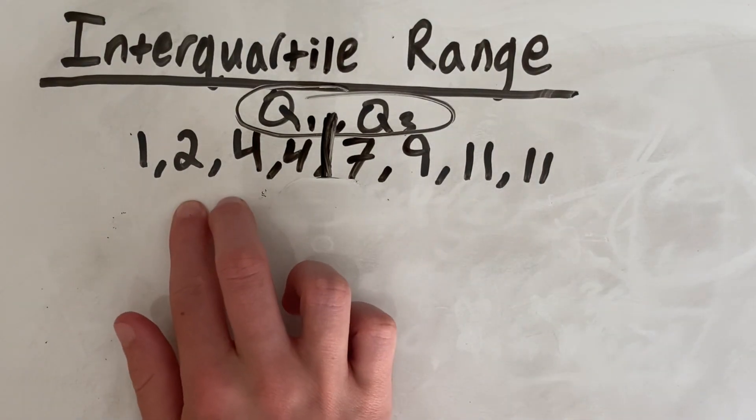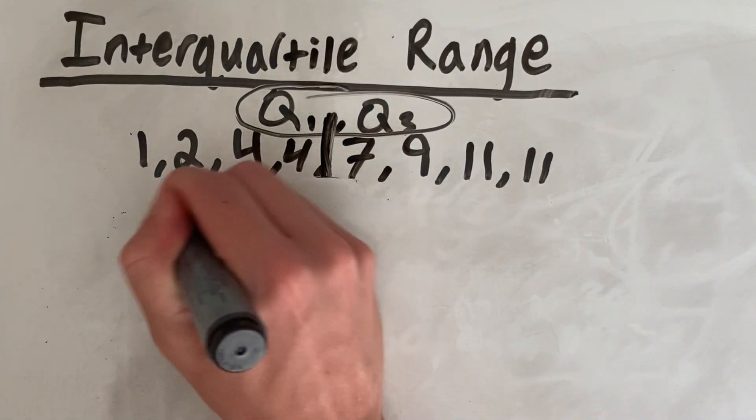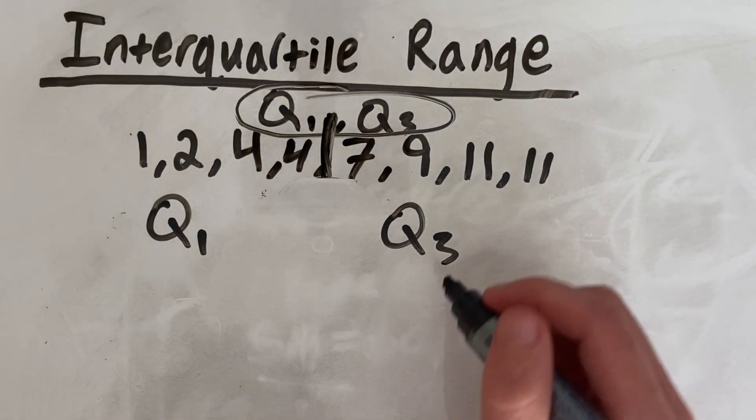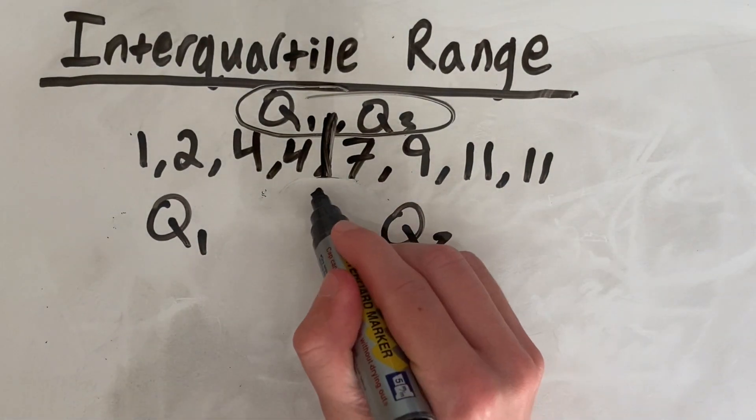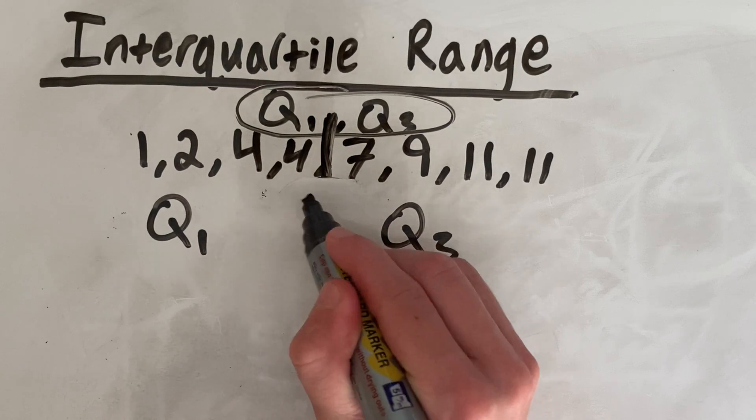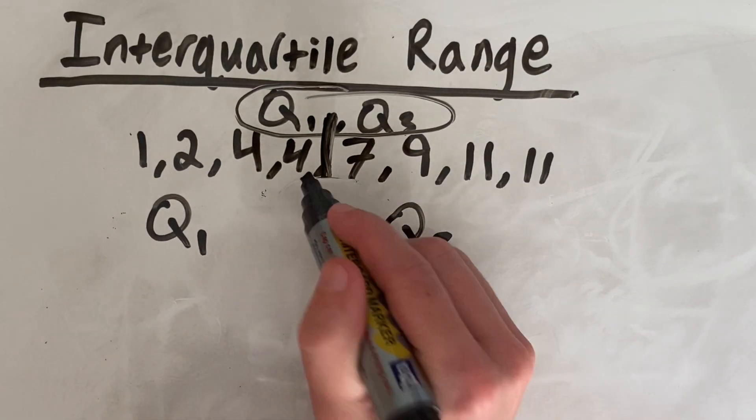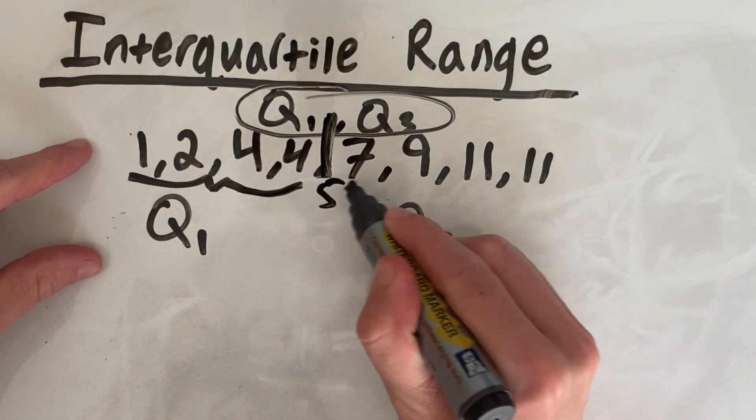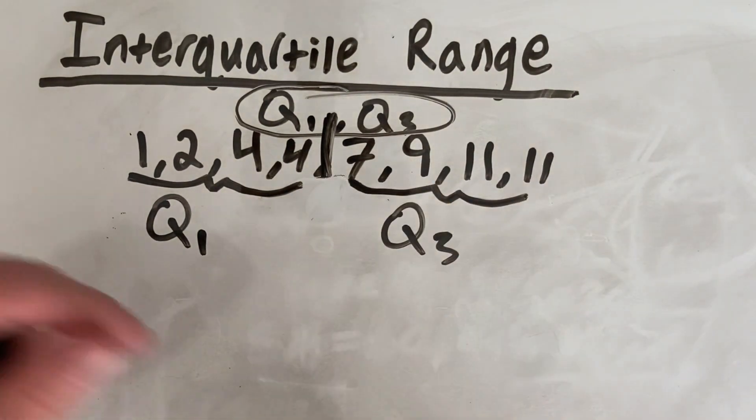So we have this half down here, which is where we will get our Q1, and this half up here, which is where we will get our Q3. And if you had a middle number, you'd just have that, and you'd ignore it. So if you had a 5 here, you'd still have this half and this half. So that won't matter.